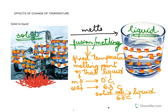As they gain more energy, the force of attraction between the molecules begins to weaken. Because the force of attraction becomes weaker, the molecules are now more free to move and they form the liquid. In the liquid, the force of attraction between the molecules is weaker and the molecules are more free to move. This process of changing a solid into a liquid is called fusion, and it takes place at the melting point of that liquid.